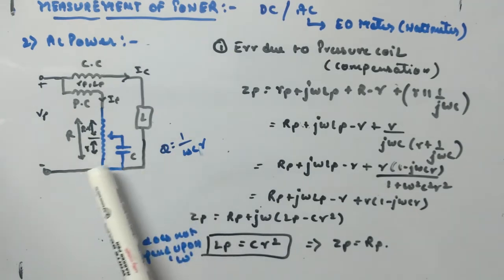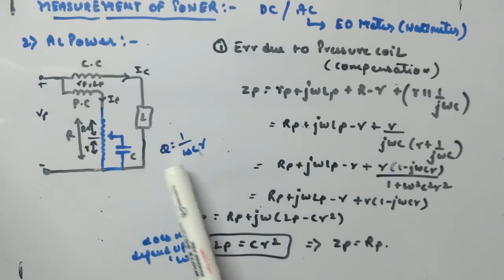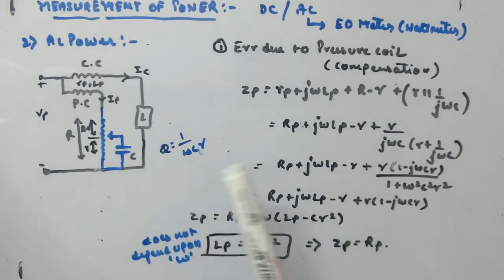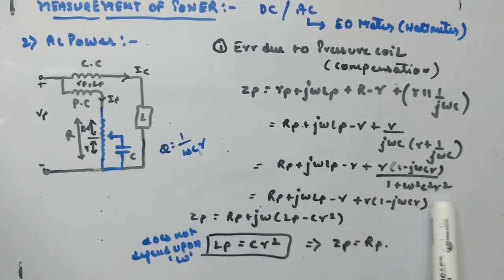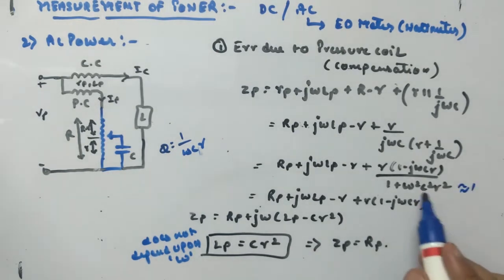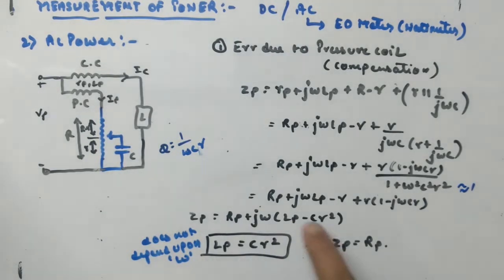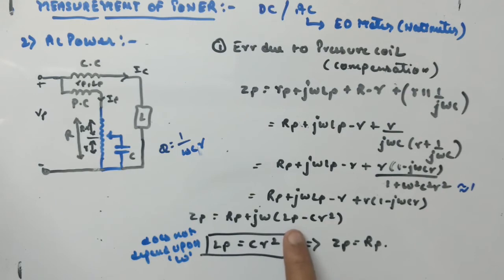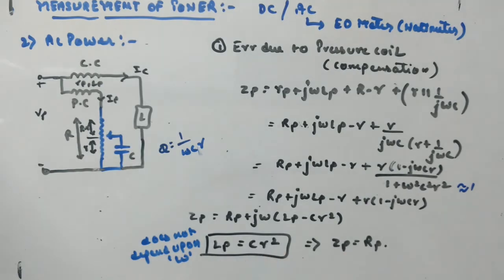Here ωCr is the quality factor Q of r and C. Since Q is very very high, 1/Q is very small, so 1 + ω²C²r² can be approximated as 1. Substituting back, Zp simplifies to Rp + jωLp + r(1 − jωCr), which further simplifies to Zp = Rp + j(ωLp − ωCr²). If we set this imaginary term to zero, we get Lp = Cr², which means Zp = Rp — purely resistive.